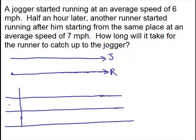So we've got a jogger and a runner. Each one has a rate and a time. We want to fill those in and then multiply them together to figure out the distance. Then we'll fill it in on our picture. Do we know the jogger's rate? A jogger started running at an average speed of 6 miles per hour. So yes, jogger's going 6 miles per hour. Do we know the runner's rate? The runner went 7 miles per hour. Now the time's the tricky part.